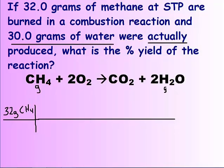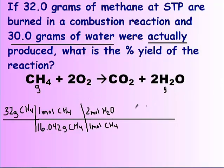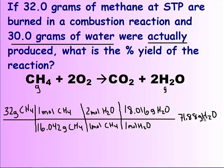So we started with 32 grams of methane, and so we needed to convert that to moles. Once we have moles, we can do our mole-to-mole ratio. And now that we have moles, we can convert those moles to grams. Solving for our theoretical, we get 71.88 grams.